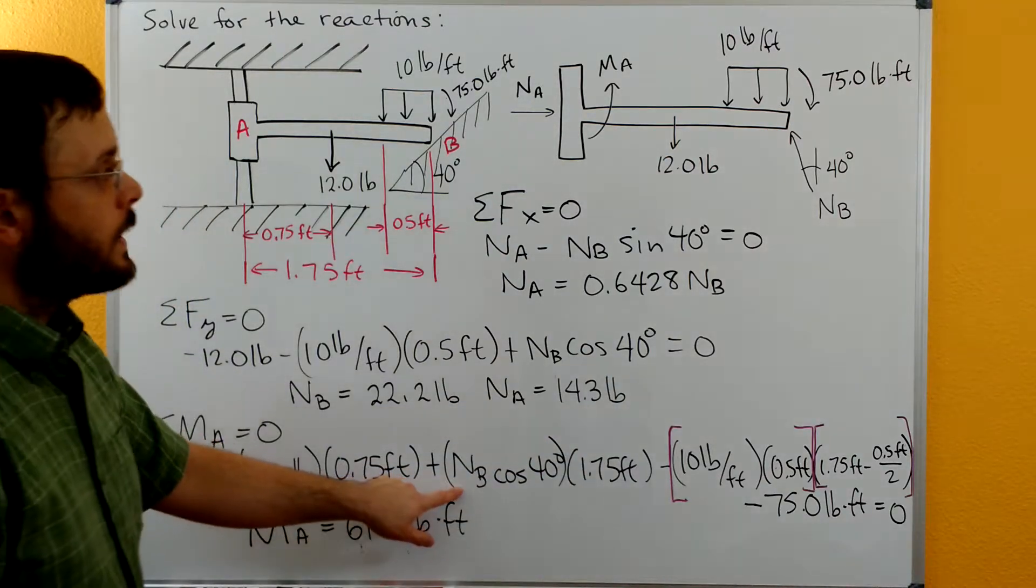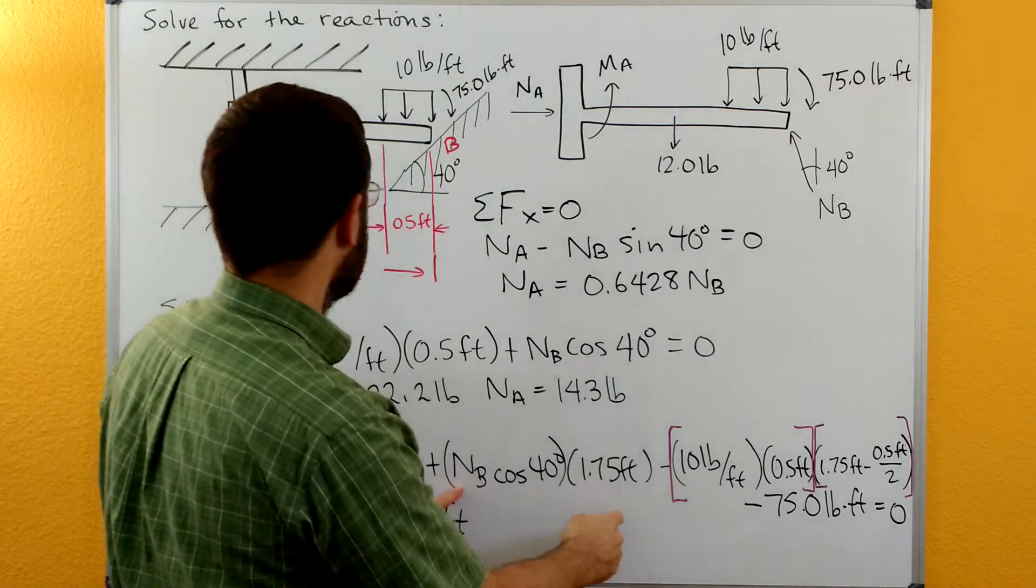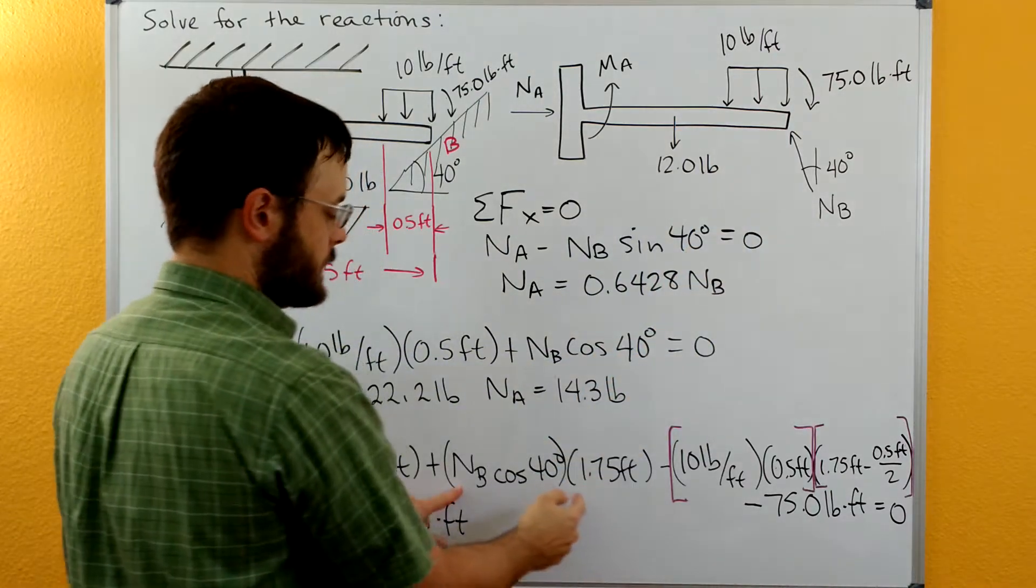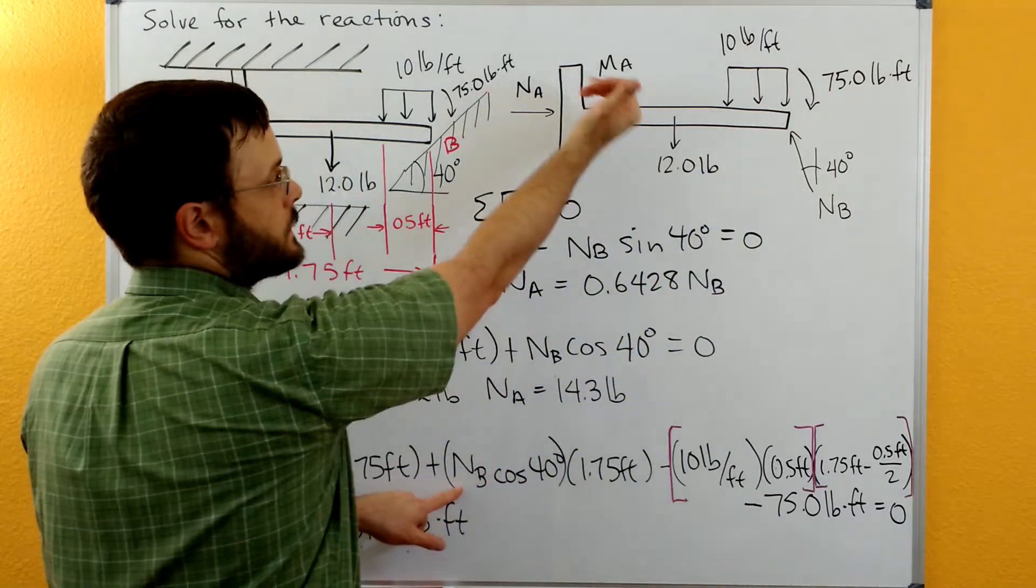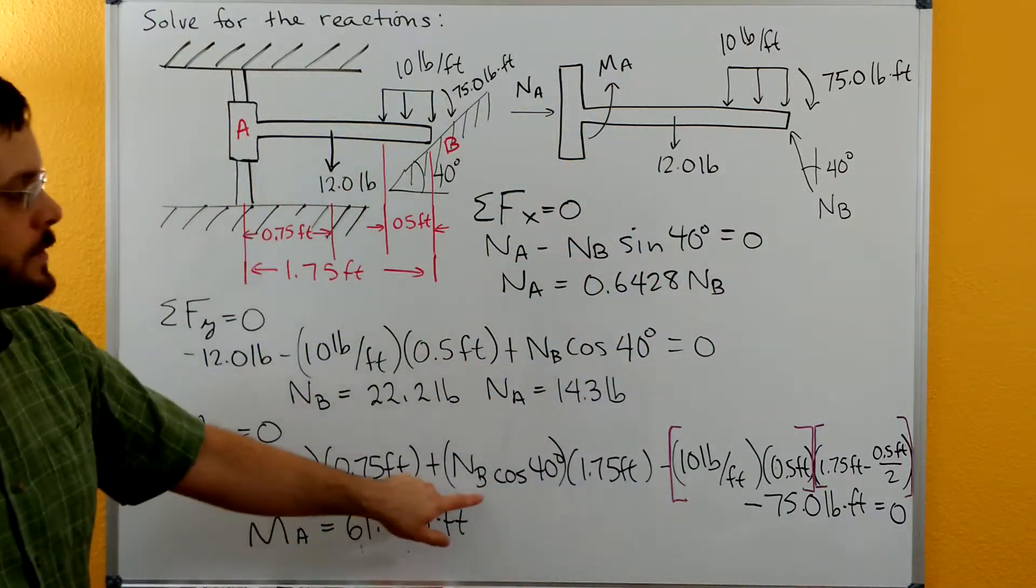Then we have our N_B cosine of 40 at the end. That's all the way at the 1.75 feet, and that's going to be a positive contribution to our moment.